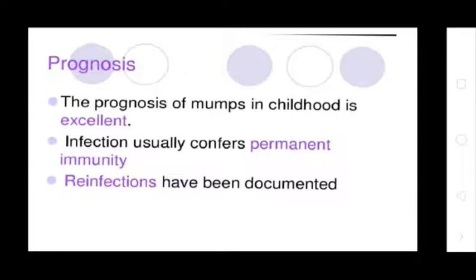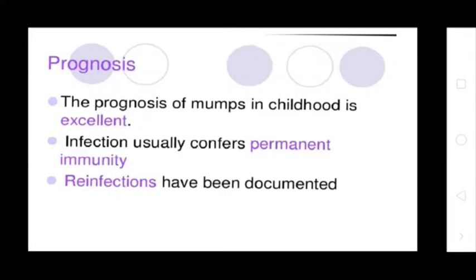Prognosis of Mumps: The prognosis of mumps in childhood is excellent. Infection usually confers permanent immunity. Reinfection may have been documented. This completes the topic of Mumps. Thank you everyone.